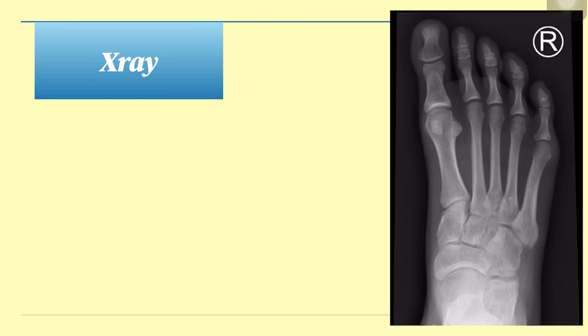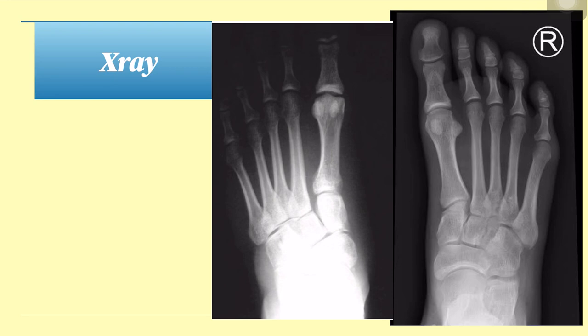Now comparing to the abnormal X-ray — we see a gap between MC1 and MC2, and a gap between the bases of the first and second metatarsals, indicating Lisfranc ligament injury. Additionally, the gap between the cuneiforms is increased, meaning the interosseous ligament between the cuneiforms has also ruptured. Previously, 5 mm diastasis was the diagnostic criterion, but now it has been updated to 2 mm.